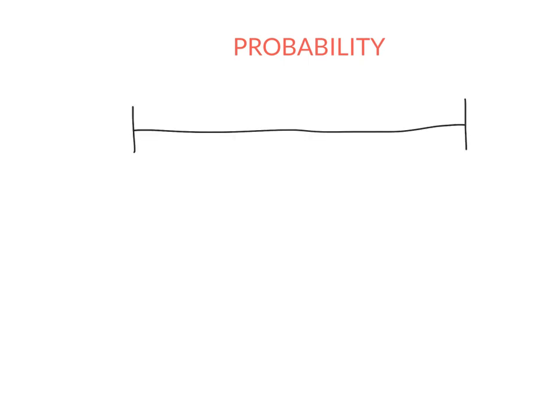Probability is all about giving random events a number to indicate how likely they are to occur. The number we give the event has to be between 0 and 1. It doesn't matter whether you write it as a fraction, decimal, or percentage, but whenever you're asked what is the probability of something, your answer needs to be a number between 0 and 1. Don't write 'likely' or 'unlikely,' and don't write a number like 50. It has to be a number between 0 and 1.